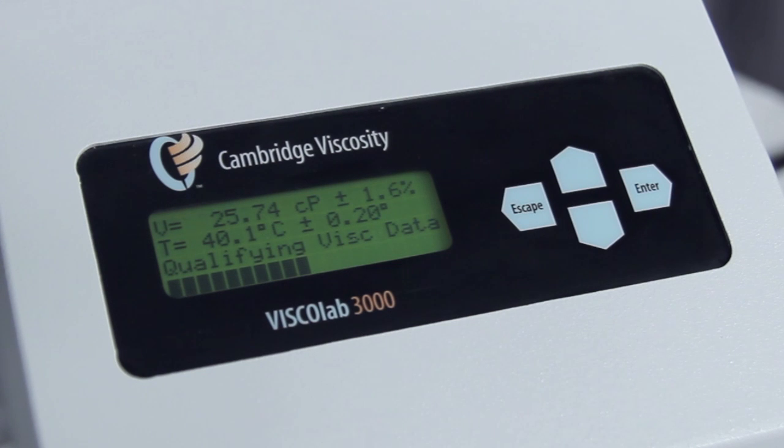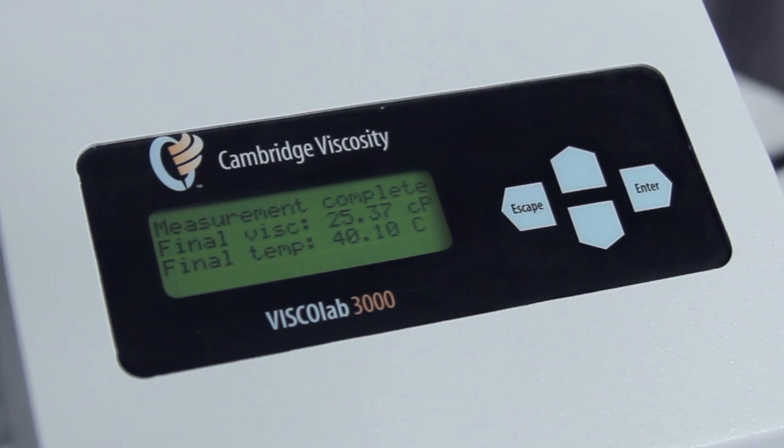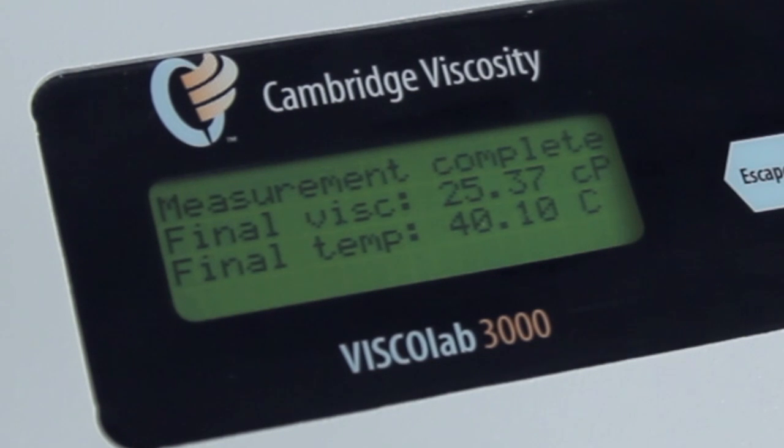Qualifying data: The system will collect 20 more data points and compare to the previous 20 data points. Report data: The data will be displayed on the screen and the optional printer if enabled. The final viscosity and temperature readings will now be displayed on the screen.